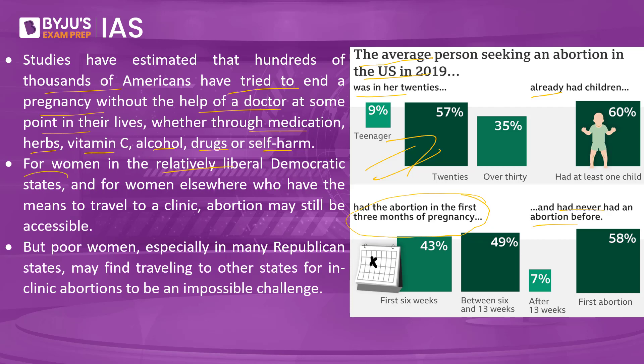For women in relatively liberal Democratic states, or for women who have the means to travel to a clinic, abortion may still be accessible. Since the Supreme Court has overruled the historical judgment, states will draft their own laws. Women in Democrat-ruled states can continue to access abortions, but women in Republican states would have to travel to Democratic states. Poor women, especially in many Republican states, may find traveling to other states for in-clinic abortions to be an impossible challenge, and may risk their lives at the hands of unqualified practitioners.